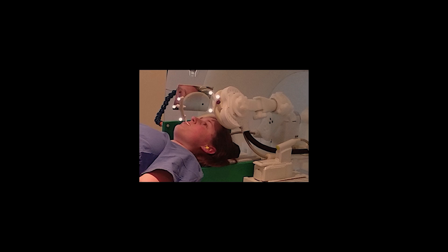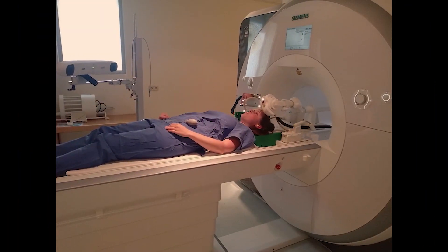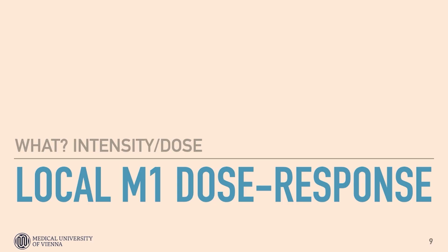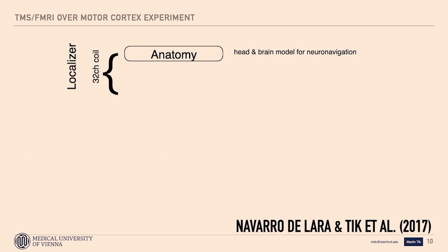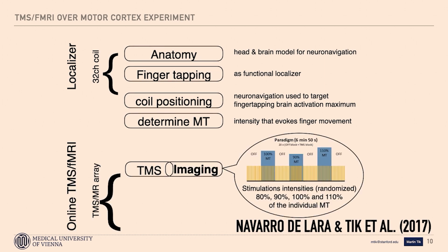The setup we used for the dose-response relationships is shown here in action. The TMS coil is on top of one of the radio frequency coils, and we stimulate through a seven-channel receiver, with another seven-channel array on the contralateral side. We also use neural navigation inside the scanner to ensure the subject is correctly positioned and that we stimulate at the right target throughout. In our first experiment, we acquired anatomical scans and a finger-tapping run as a functional localizer, placed the TMS coil over the individual's motor cortex, determined the motor threshold, and stimulated in blocks of 10 seconds at 80, 90, 100, and 110 percent of the individual's motor threshold.